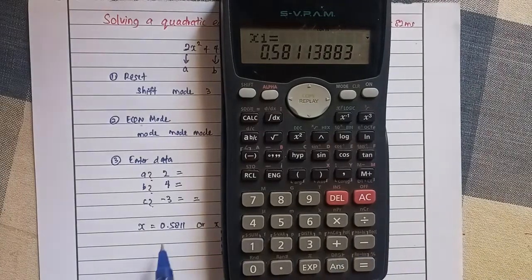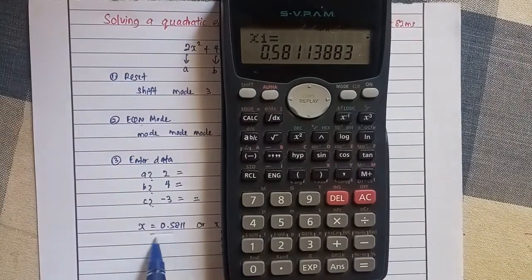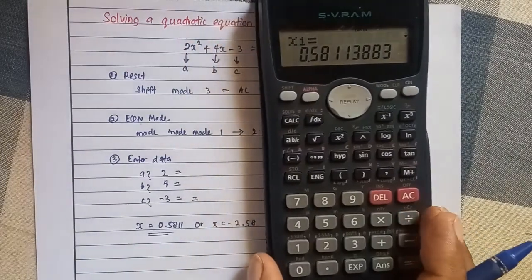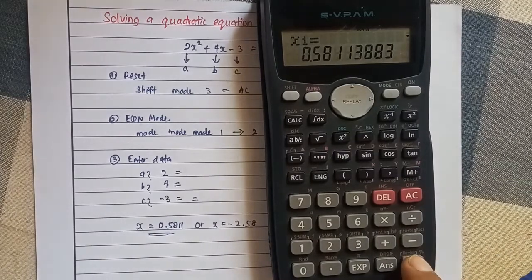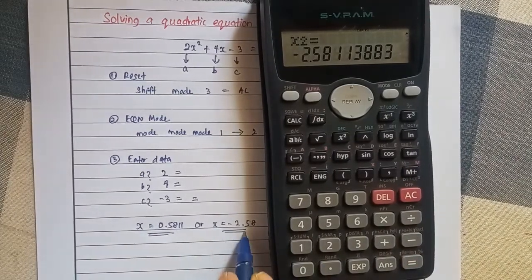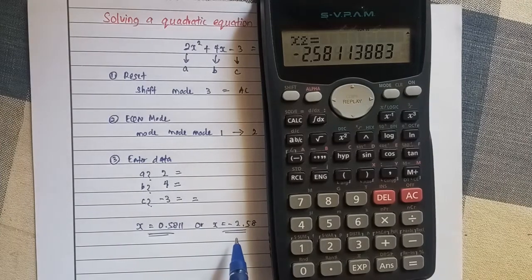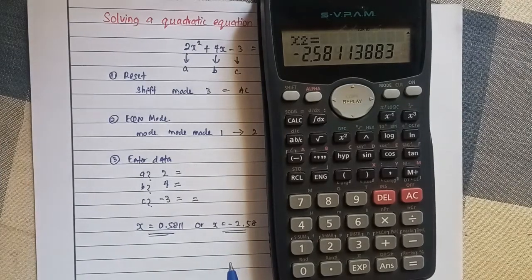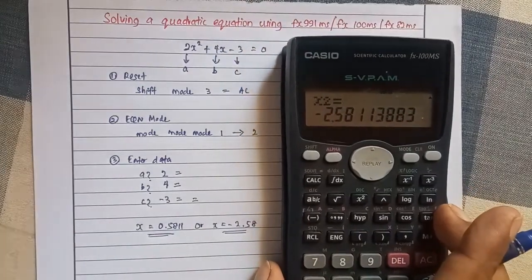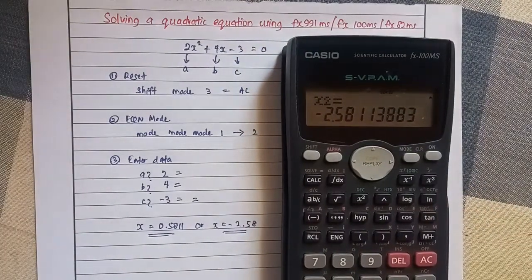Then we are getting the value of X as 0.5811. To get the other root, again you need to press equal. Then you can get the other root value of X as minus 2.58. So that is how we can solve a quadratic equation using our scientific calculator.